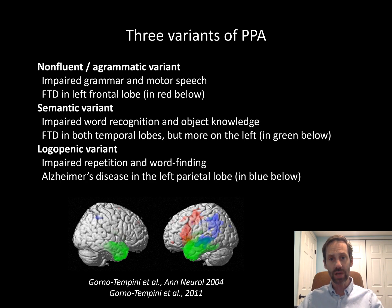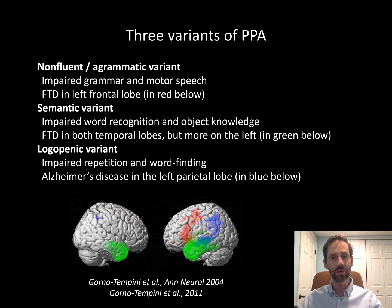There is a third type of primary progressive aphasia, the logopenic variant, in which people just struggle to come up with words and may also have a hard time repeating things, particularly if a sentence is long or complicated. This, however, is most commonly due to underlying Alzheimer's disease pathology.